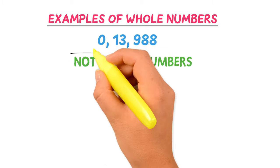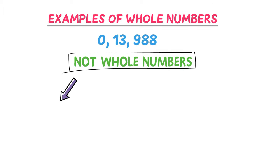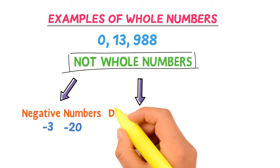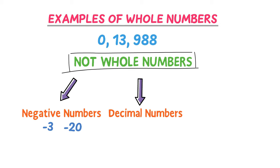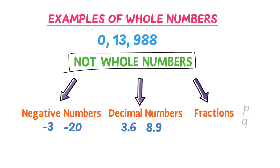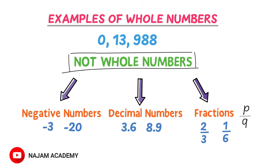Now what are not whole numbers? All the negative numbers are not whole numbers, like minus 3, minus 20, etc. Secondly, all the decimal numbers are not whole numbers, like 3.6, 8.9, etc. Thirdly, all the numbers in fraction form (p/q) are not whole numbers, like 2 upon 3, 1 upon 6, etc.